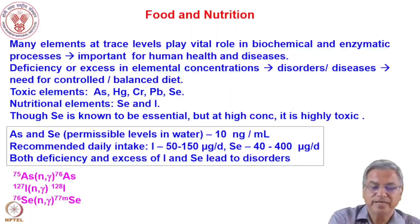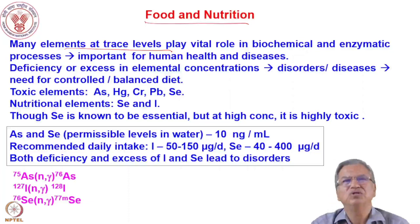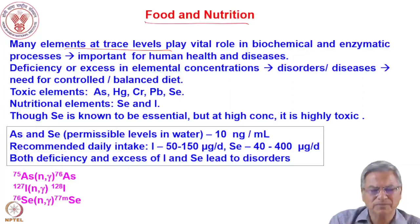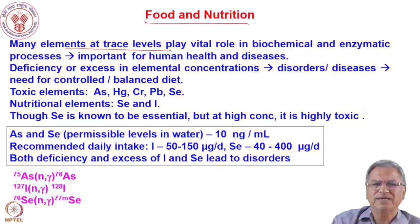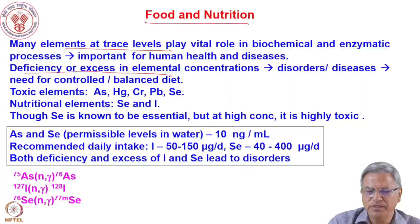In food and nutrition, NAA is very popular. Many elements at trace level play vital roles in our biochemical system and enzymatic processes. There are macronutrients and micronutrients essential to health. Deficiency of certain elements causes illness; excess makes them toxic. There is an optimum concentration required for good health. The deficiency or excess of certain elements in our body leads to disorders and diseases, requiring a balanced and controlled diet.